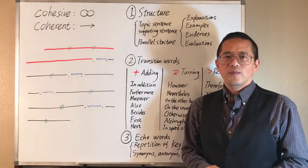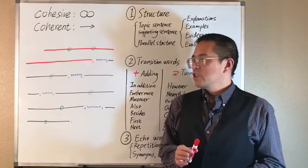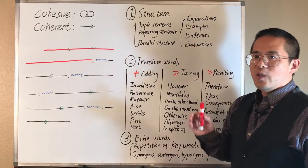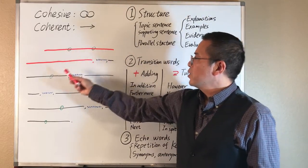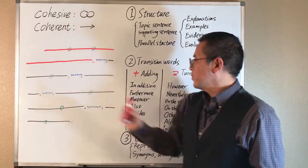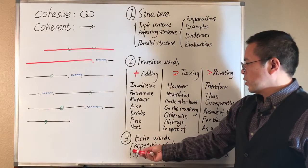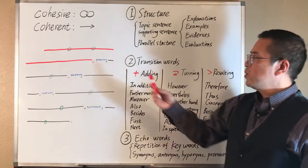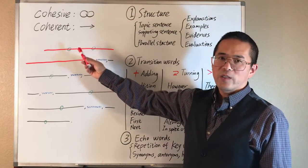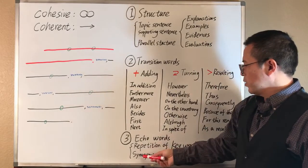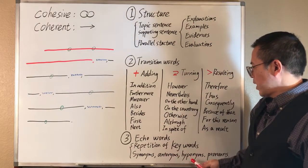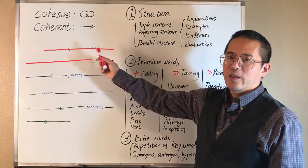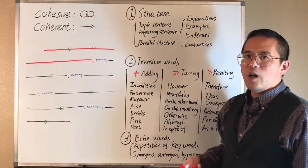The third method to improve cohesion and coherence is to use echo words, which are represented here as green circles. The use of echo words includes repetition of keywords, especially those in the topic sentence. We may also use synonyms, antonyms, hyponyms, and pronouns to relate to these keywords, and thus improve the cohesion of the paragraph.